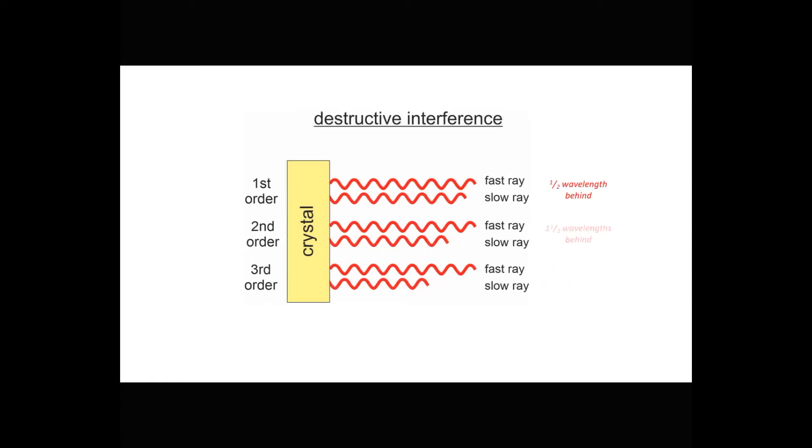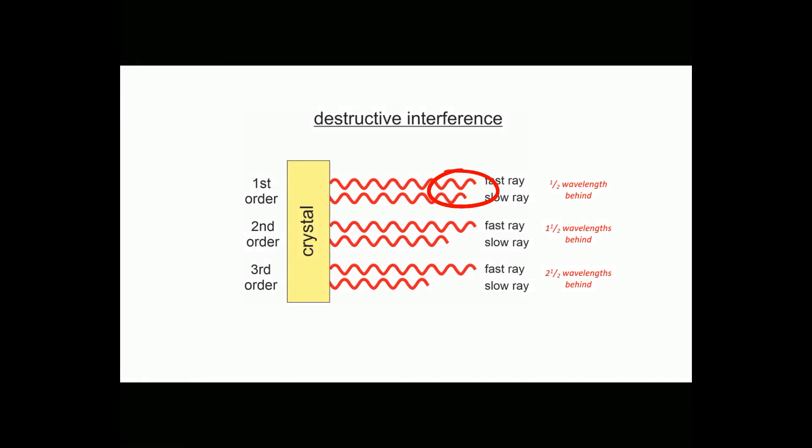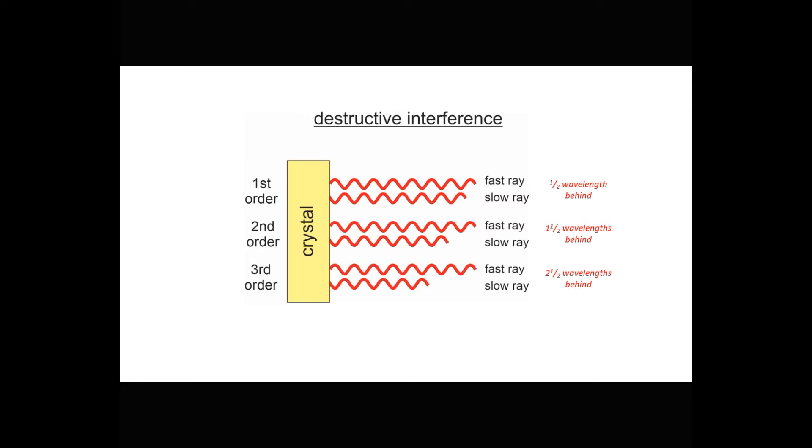And the same thing applies for destructive interference. Waves that are interfering destructively could differ by one-half wavelength, or one-and-a-half wavelengths, or two-and-a-half, and so forth. So we may see different order interference colors that appear in almost the same hues. But they're different because the number of wavelengths between the slow and the fast rays are different.